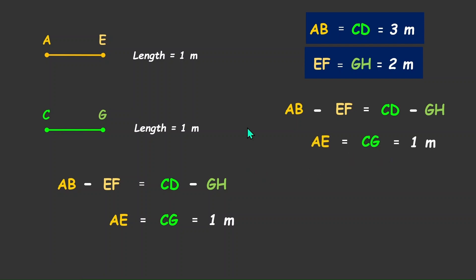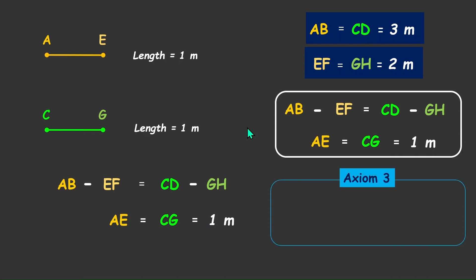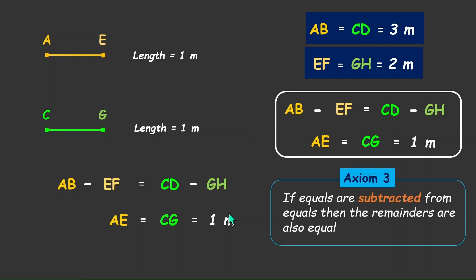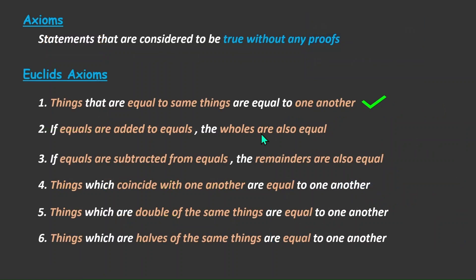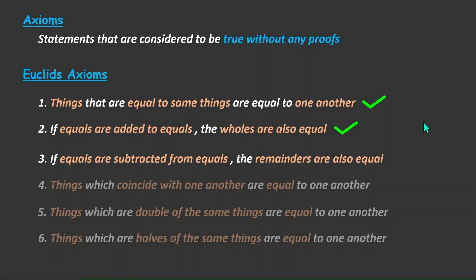This is the third axiom, which says: if equals are subtracted from equals, then the remainders are also equal. So in this class, we saw the first three axioms: things equal to the same thing are equal to one another; if equals are added to equals, the wholes are also equal; and if equals are subtracted from equals, the remainders are also equal. In the next class, we'll see the remaining axioms. Thank you.